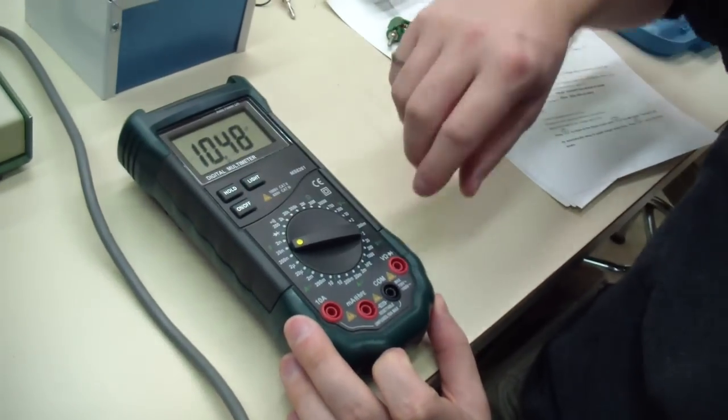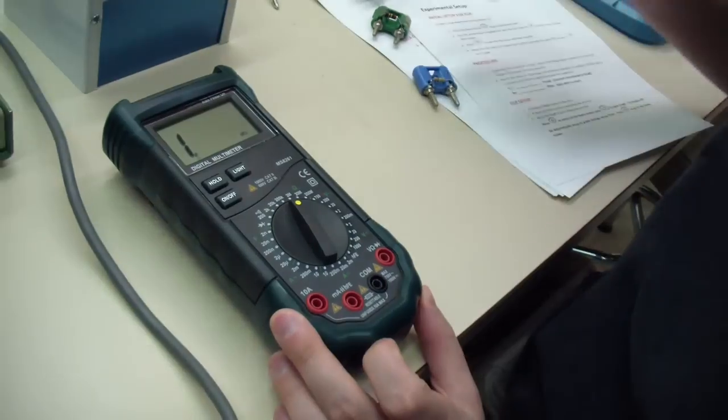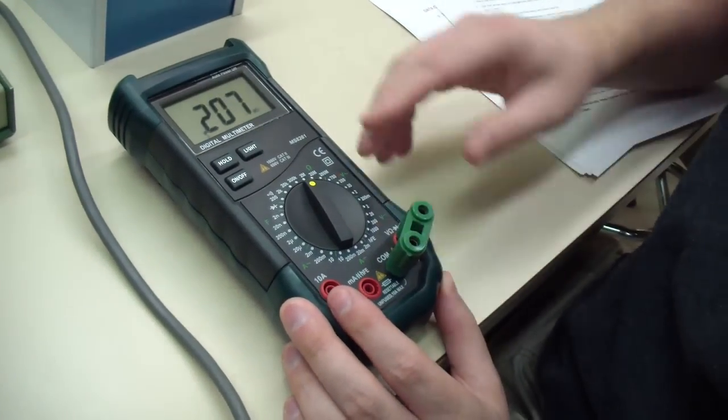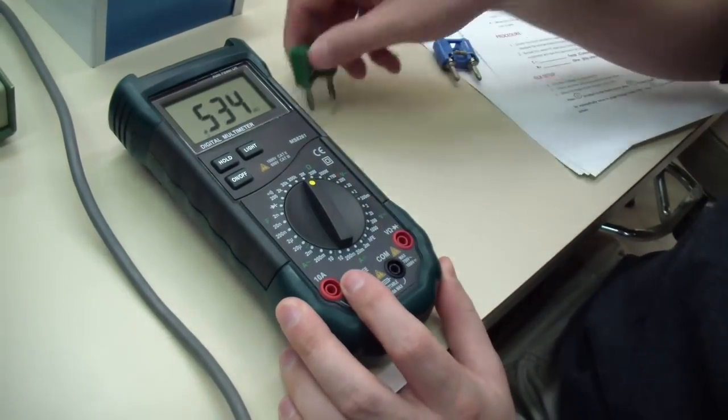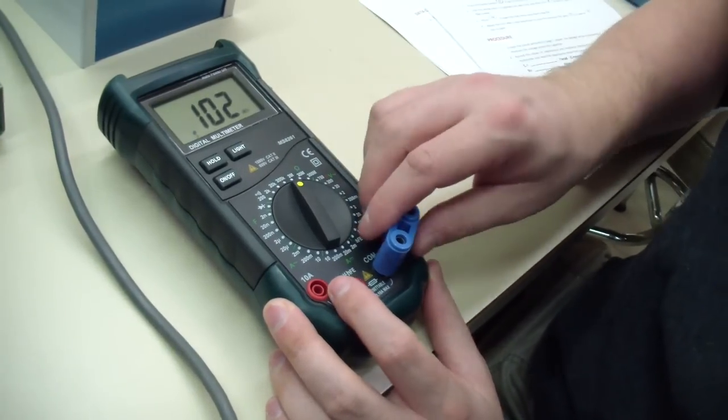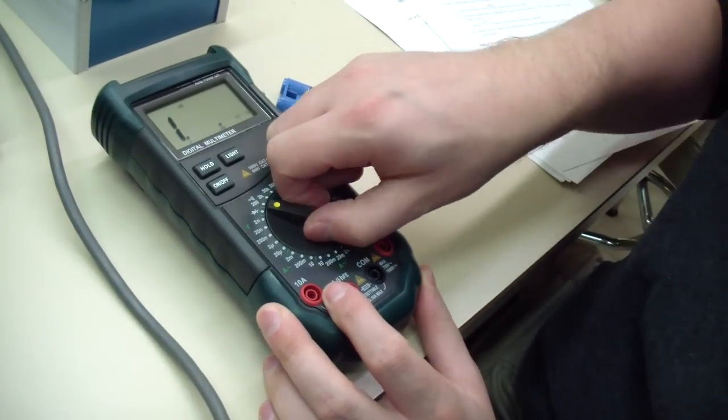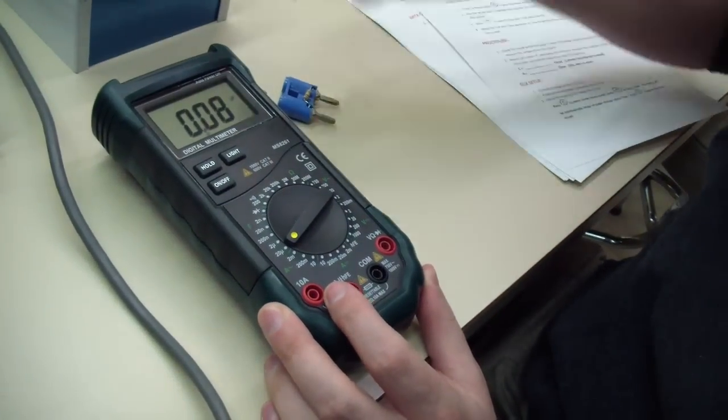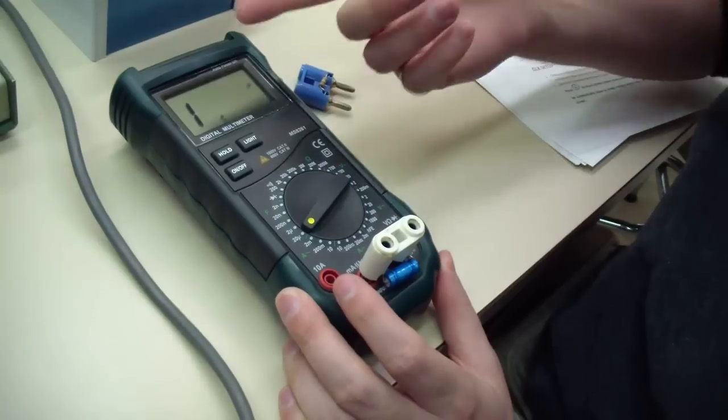Use a multimeter to determine the resistance and capacitance values of the resistors and capacitor provided. Note that you can plug these resistors and the capacitor directly into the meter. Your capacitor may be too large to be measured with the multimeter, in which case you should go by the manufacturer's value and assume an appropriate uncertainty.